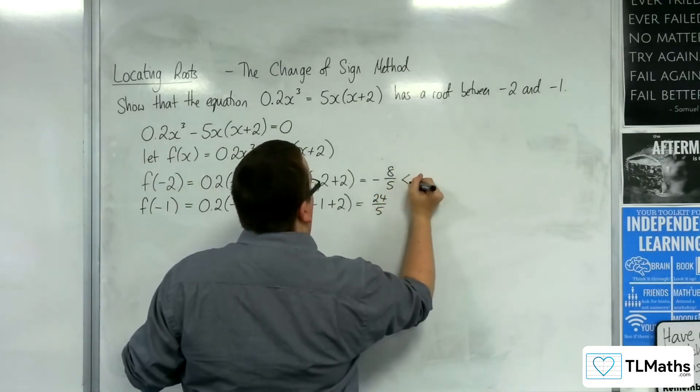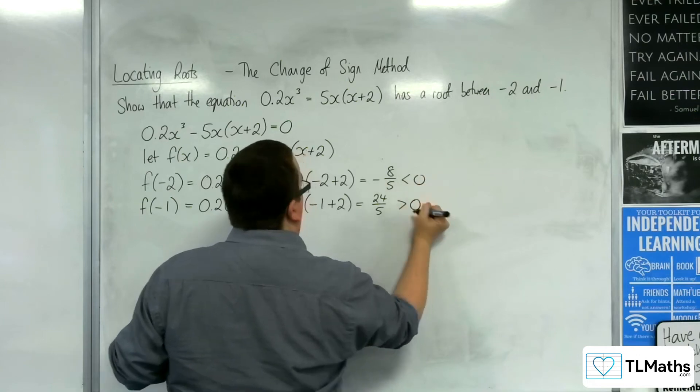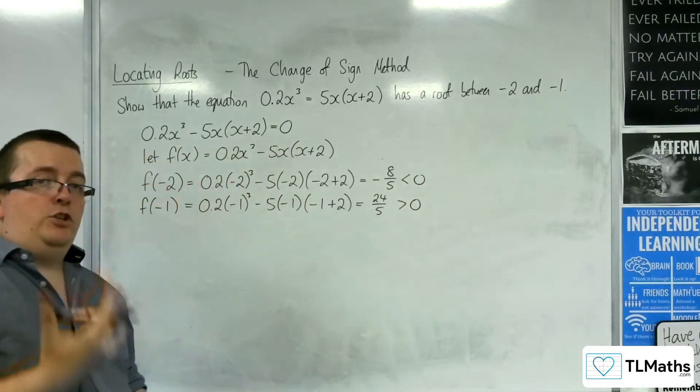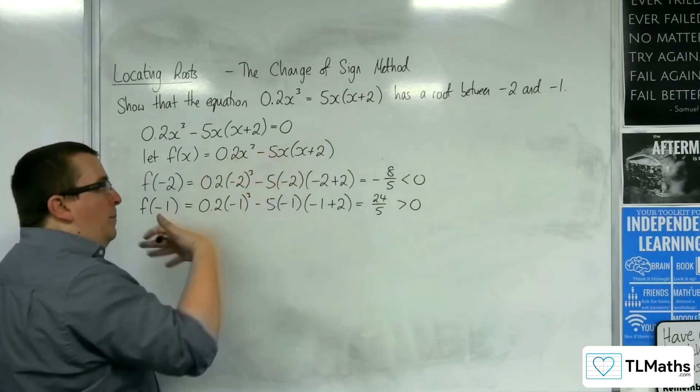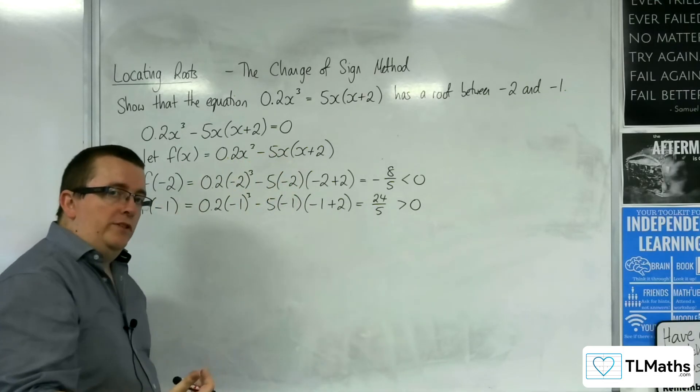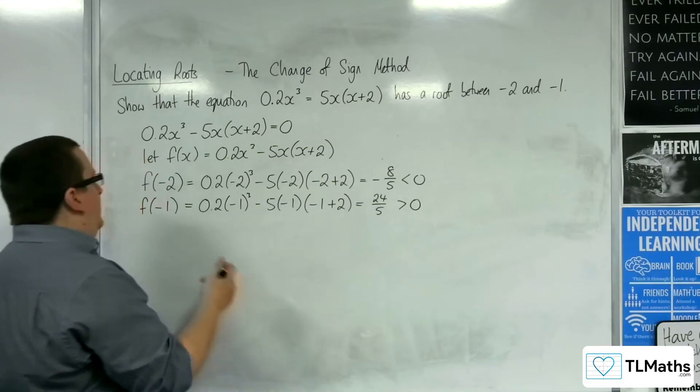So we've clearly got one that is negative and one that is positive, and so we have that change of sign. Now, because this is a cubic, it will be continuous between those two points as well.